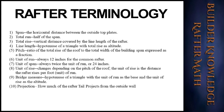Let's get started with some rafter terminology — we will cover each one individually as the lesson progresses. The span is the horizontal distance between the outside top plates. The total run is half of the span. The total rise is the vertical distance covered by the line length of the rafter. The line length is the hypotenuse of a triangle with total rise as altitude. The pitch or slope is the ratio of the total rise of the roof to the total width of the building span, expressed as a fraction. The unit of run is always 12 inches for the common rafter.